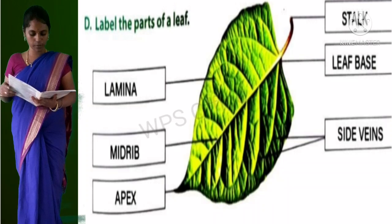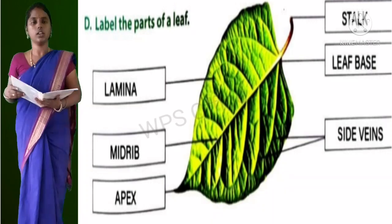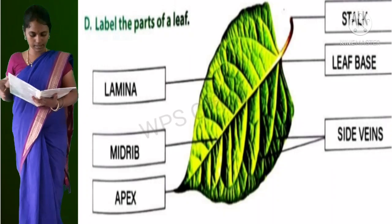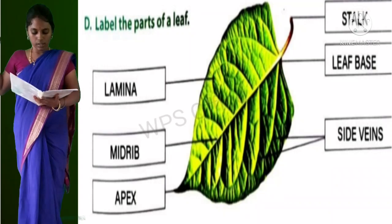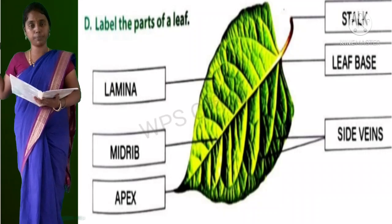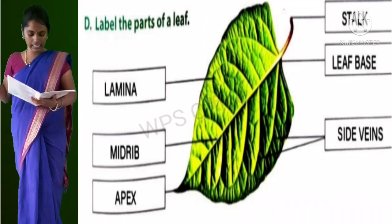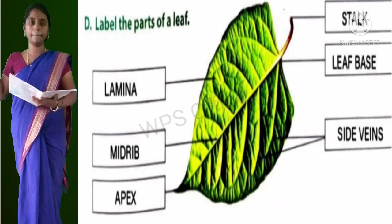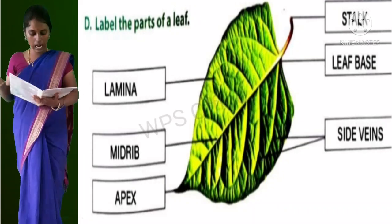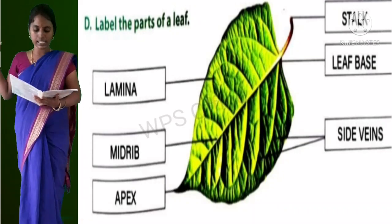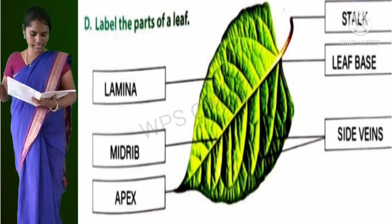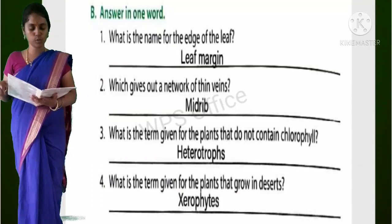Label the parts of a leaf. A leaf is given and you are going to label its parts. The parts are: stalk, leaf base, side veins, lamina, midrib, apex. Now worksheet 2.